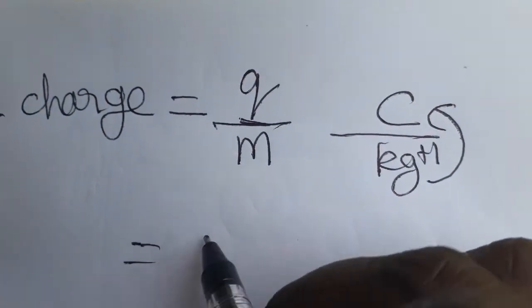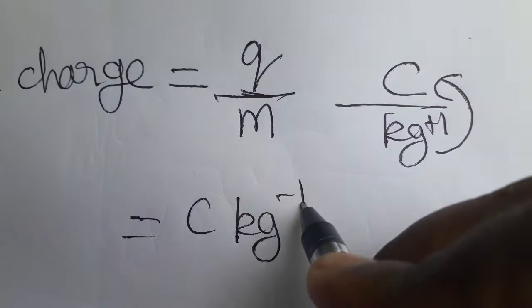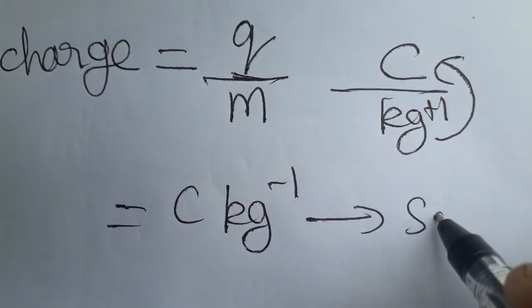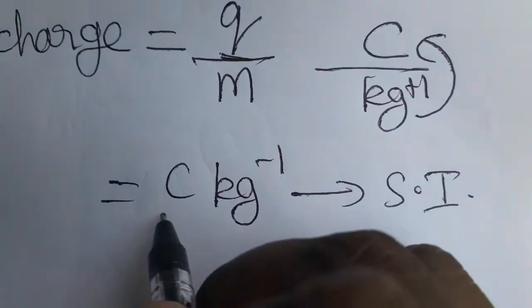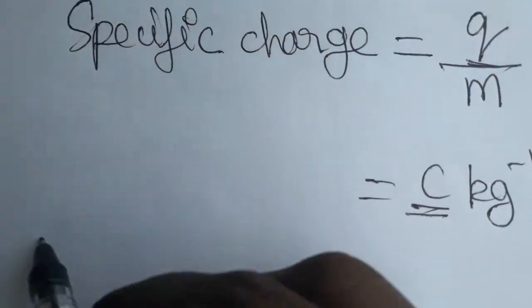Coulombs kg⁻¹ is the SI unit of specific charge. Now for the dimensional formula, when we are writing the dimensional formula, coulombs we have to take as charge.